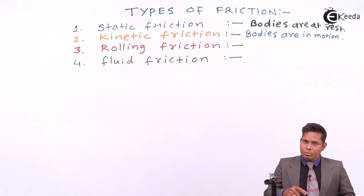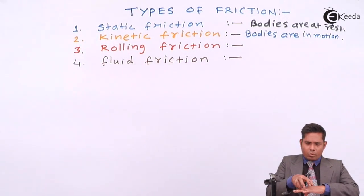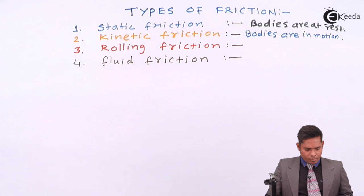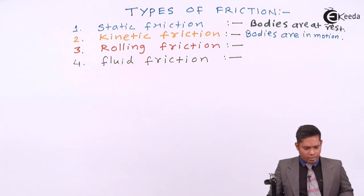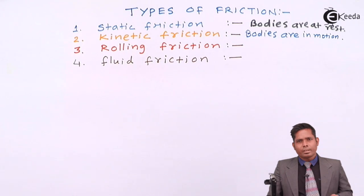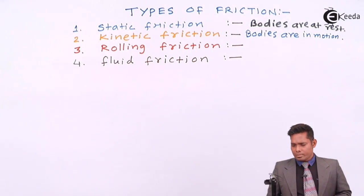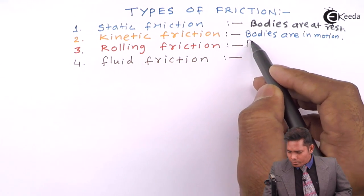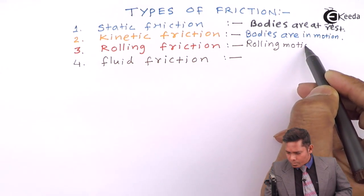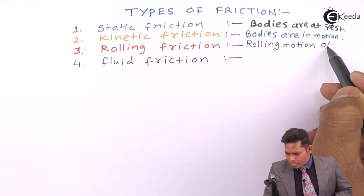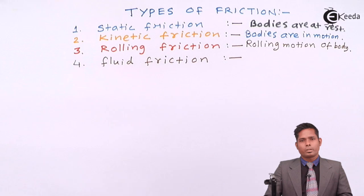Rolling friction will come into play when one body is rolling over the surface of another body. When one body rolls over the surface of another body, rolling friction acts. This is due to the rolling motion of the body.